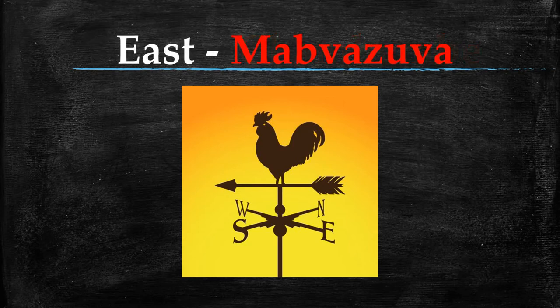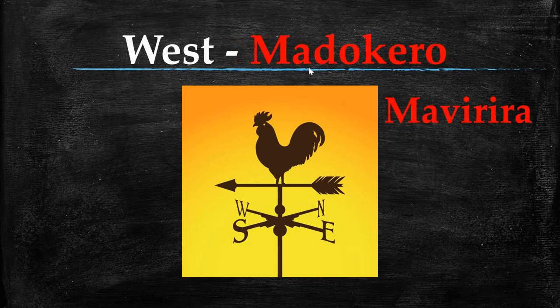East is Mabazuwa. The word Mabazuwa — zuwa means sun, that's where the sun rises from. West is called Madokero, or other dialects call it Mavirira, where the sun sets.